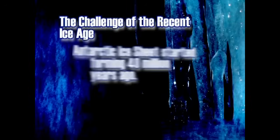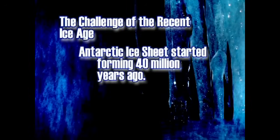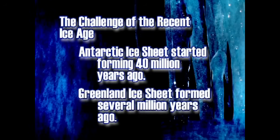Now they believe in 30 ice ages, based on oxygen isotope wiggles in deep sea cores. Not only that, they claim the Antarctic ice sheet started forming 40 million years ago and reached a peak, and has been in equilibrium for 15 million years. The Greenland ice sheet formed and reached its present height several million years ago. That's the challenge that uniformitarians give us — what do we do about it?